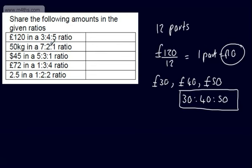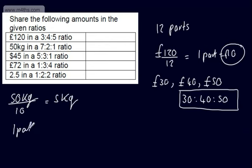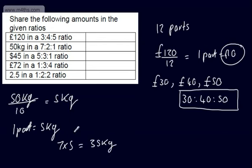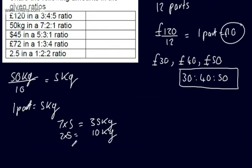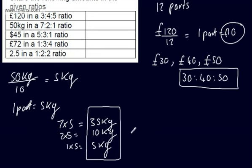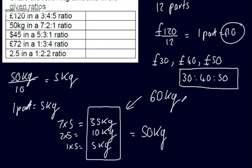50 kilograms in a 7 to 2 to 1 ratio. 7 plus 2 plus 1 gives 10 total parts. 50 kilograms divided by 10 is equal to 5 kilograms, so 1 part is equal to 5 kg. All we've got to do then is 7 times 5, which gives us 35 kilograms; 2 times 5, which gives us 10 kilograms; and 1 times 5, which gives us 5 kilograms. So the 7 part is 35 kilograms, the 2 part is 10 kilograms, and the 1 part is 5 kilograms. Just make sure this totals up to what you started with — that does equal 50 kilograms. If it came to 60 kilograms, you'd know you'd done something wrong.